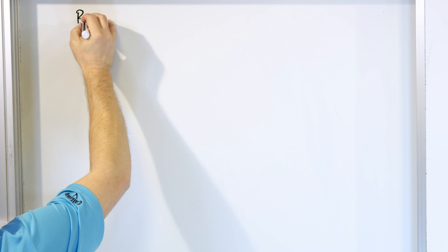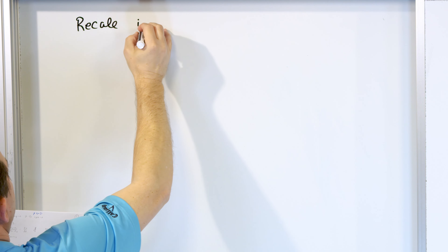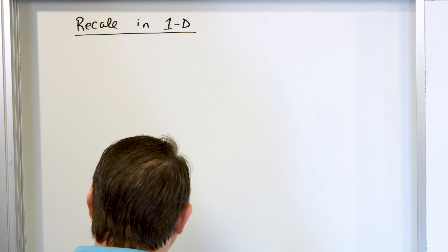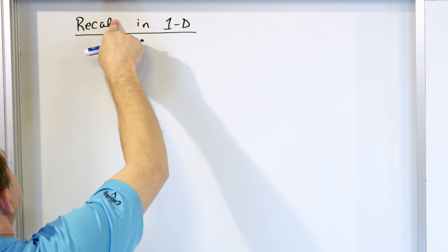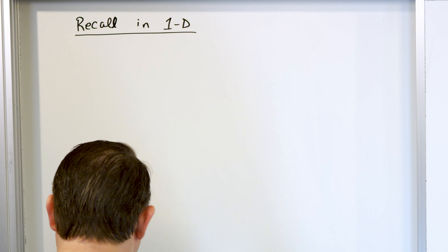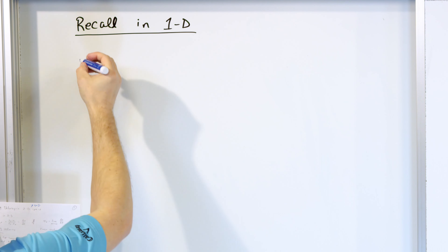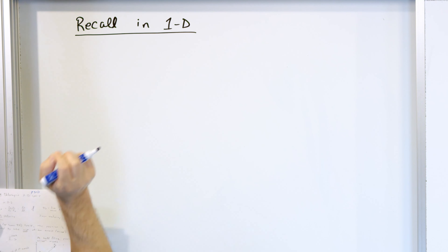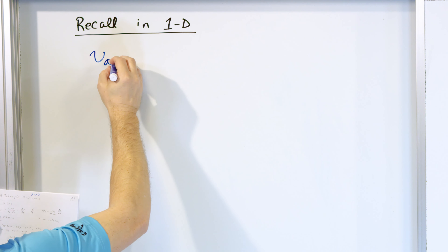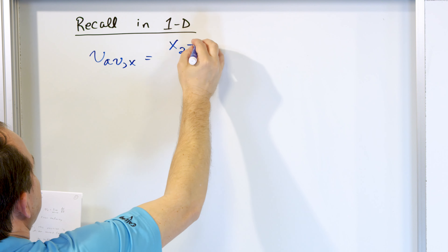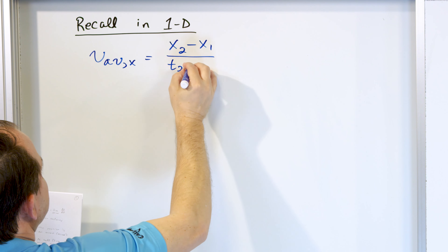The first thing is that we have to recall what we already know — recall motion in one dimension. We've already done that in lessons past and solved lots of problems in one dimension. What did we learn? We learned that if there's only motion along a straight line back and forth in the x direction, the average velocity in the x direction was just x2 minus x1 over t2 minus t1.